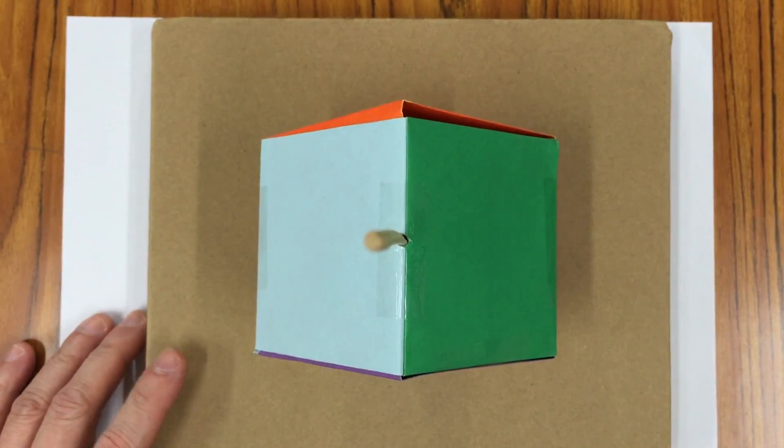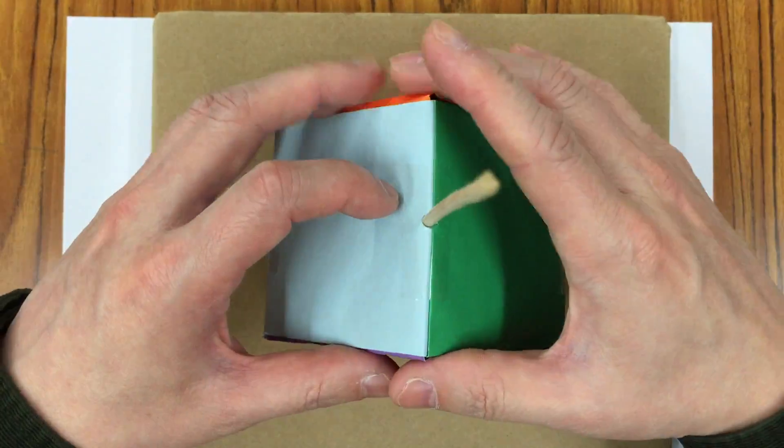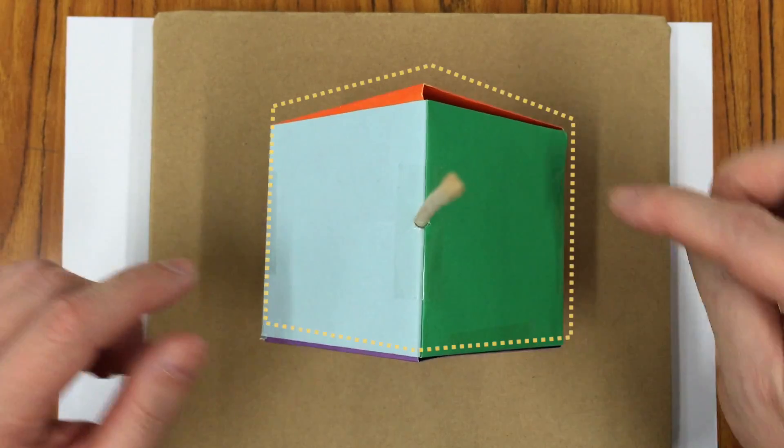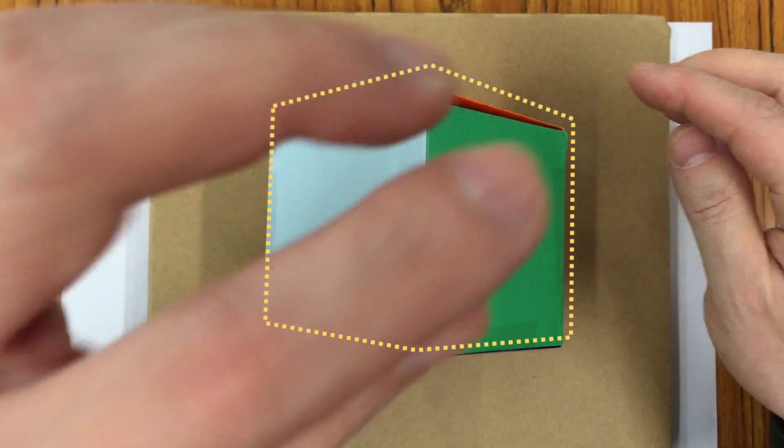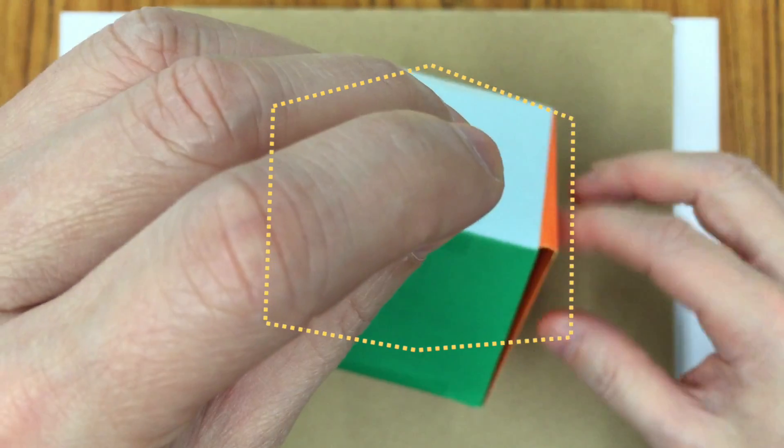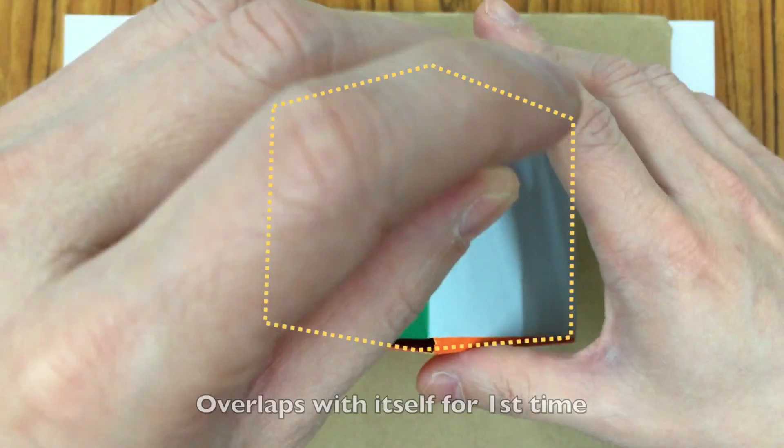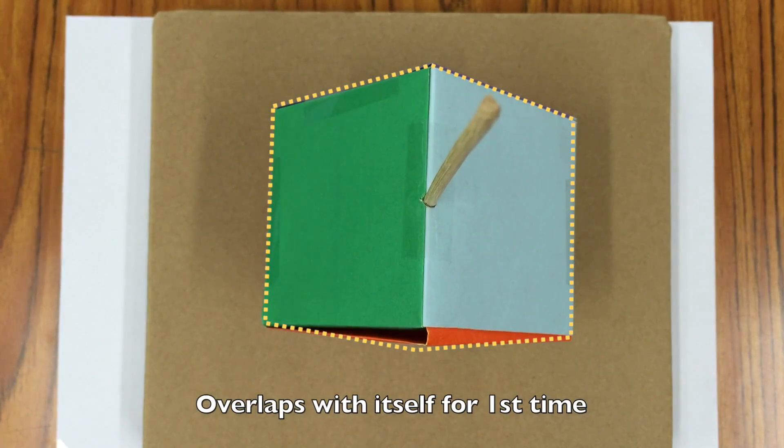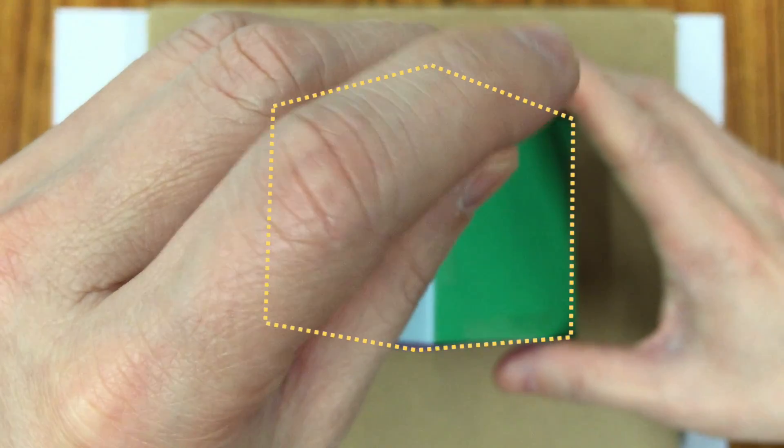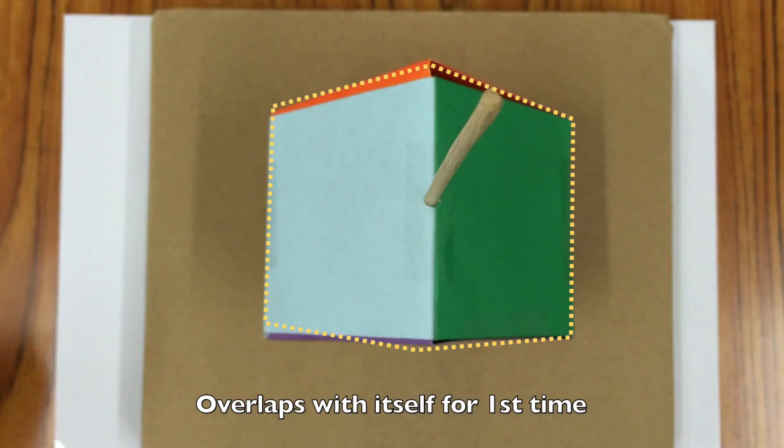So what is the order of this symmetry? Let's say this is the original position. If I rotate it by 180 degrees, it will overlap with itself. If I rotate it again to 360 degrees, again it will overlap with itself. So this is an order-two rotational symmetry.